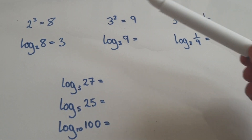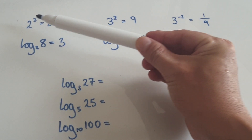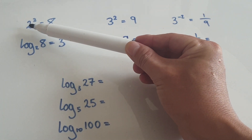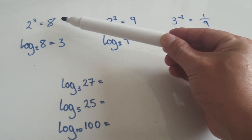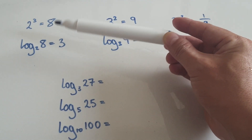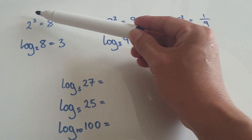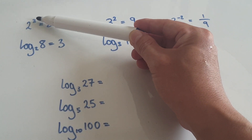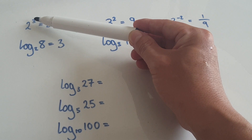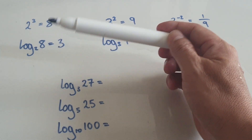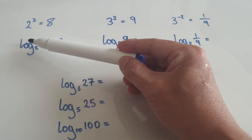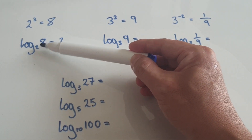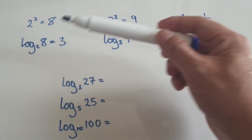Let me give you an introduction to logs. We know 2 to the power of 3 is 8. When it comes to logs, we want to talk about the index — we want to talk about this 3 here. For example, what is log base 2 of 8?